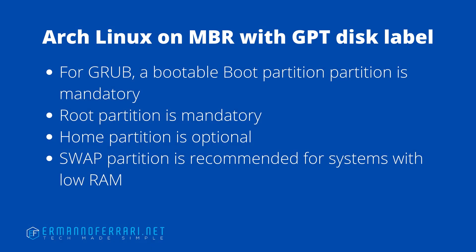We can also install Arch Linux on an MBR system with the GPT disk label, although it's not guaranteed to work. On old hardware, you might be better off with the MBR DOS disk label system, as the BIOS in those computers might not support GPT. There is a small fix for this documented in the Arch Wiki — I'll put a link in the video description. If you want to install Arch Linux on an MBR system with GPT and use GRUB as a bootloader, a bootable boot partition is mandatory.